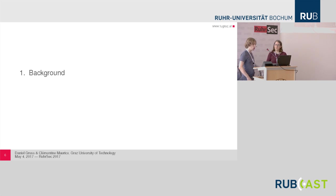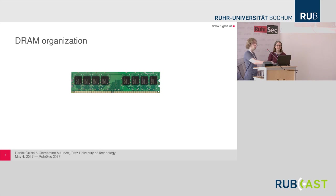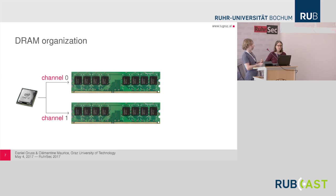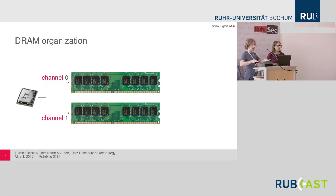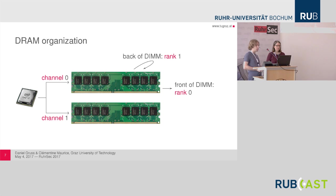Starting with the background. If we want to talk about Rowhammer, first we have to talk about how DRAM is organized. All of us know such a DRAM module — you see the chips there. These DRAM modules, typically you have multiple of them in your system, and the CPU operates them in separate channels. These channels can operate simultaneously, so they work in parallel — you can double the throughput of your DRAM with that. Also, DRAM modules have multiple sides, usually called ranks. Here we have two sides: rank zero and rank one. There are also DIMMs with more ranks.